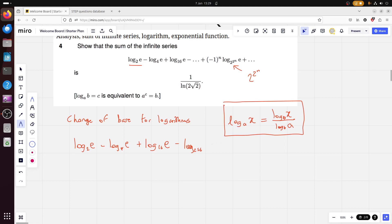If I call this log base 2 of e minus log base 4 of e plus log base 16 of e minus dot dot dot. Let me just write the next term so we get an idea of what the sequence really does. When n is 3, we're going to have 2 to the 8 there, which is 256. Minus log base 256 of E, and then dot dot dot.